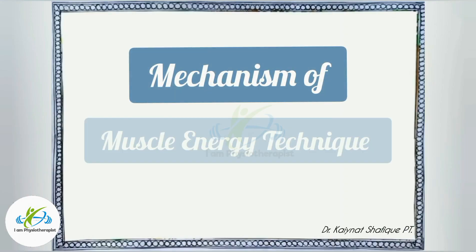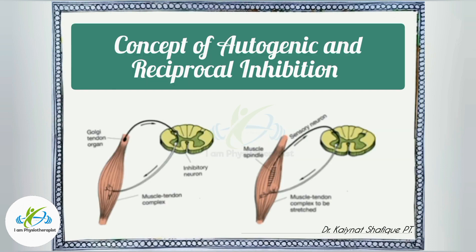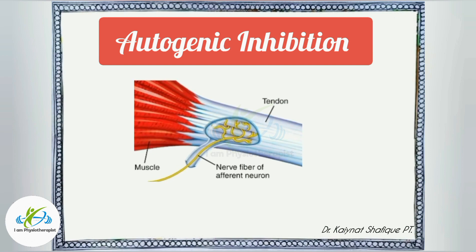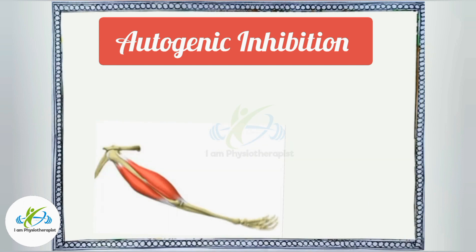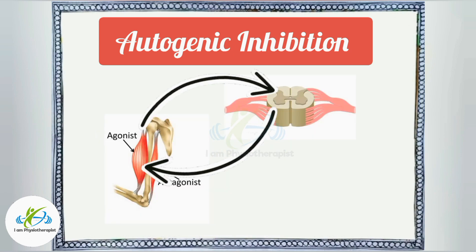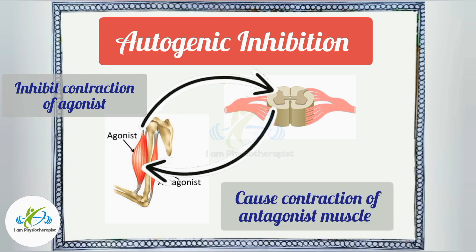The underlying mechanism of muscle energy technique is based on autogenic and reciprocal inhibition. The Golgi tendon organ is located between the muscle belly and its tendon. It senses the increase in tension when the muscle contracts or stretches. When the muscle contracts, the Golgi tendon organ is activated and responds by inhibiting this contraction and contracting the opposing antagonist muscle group. This process is known as autogenic inhibition.